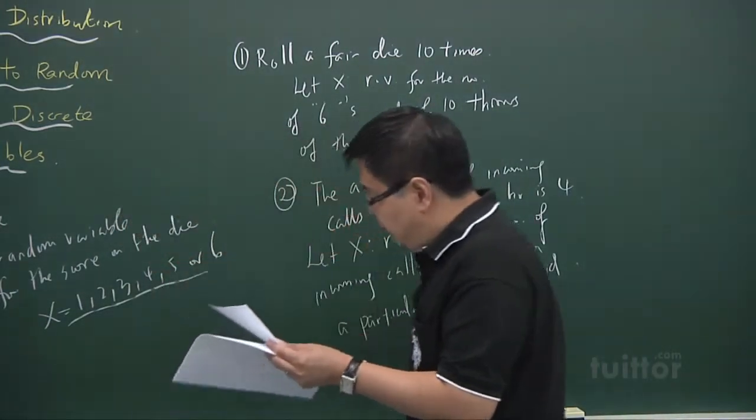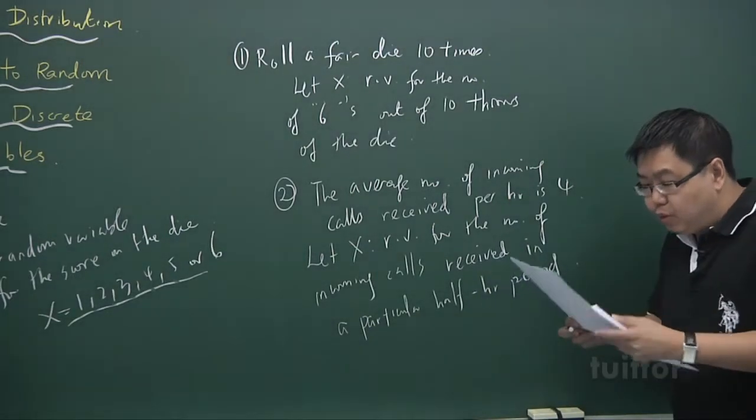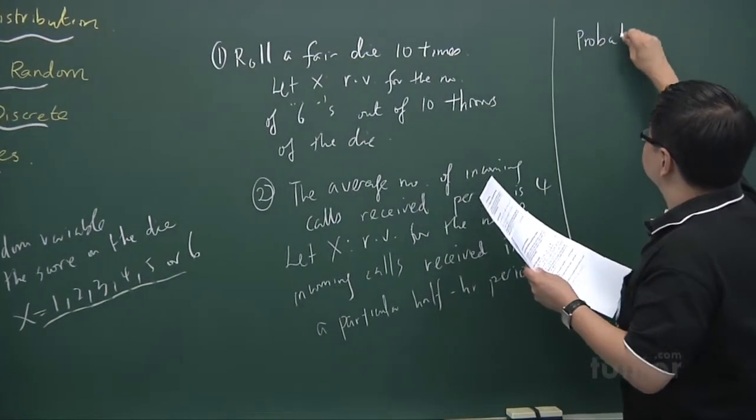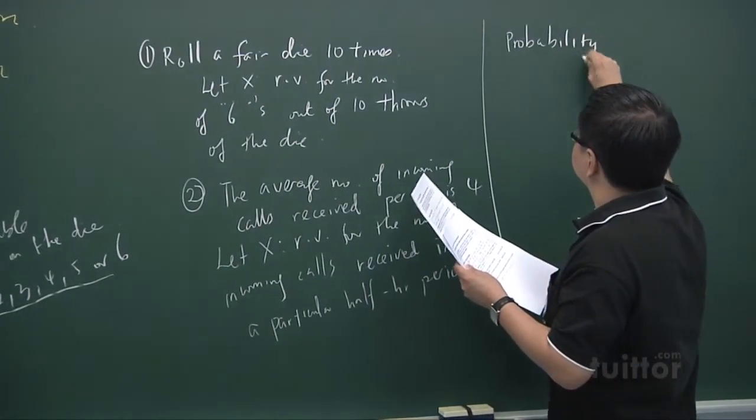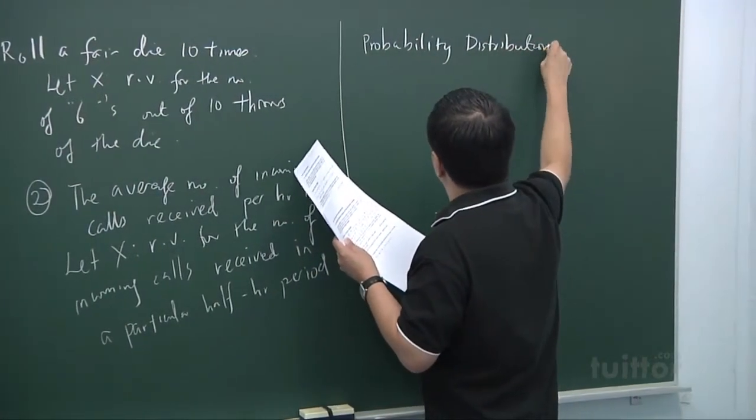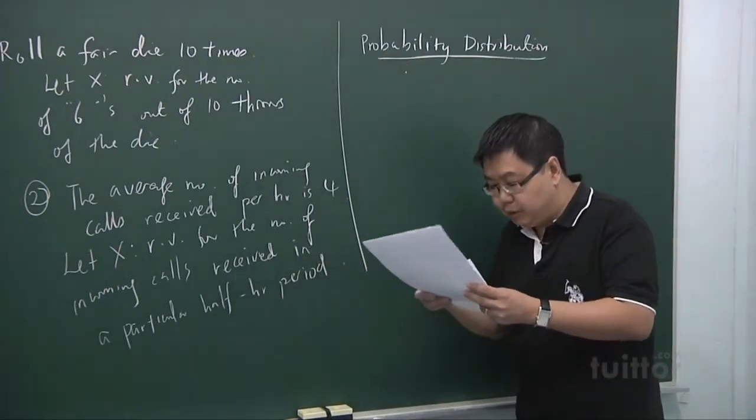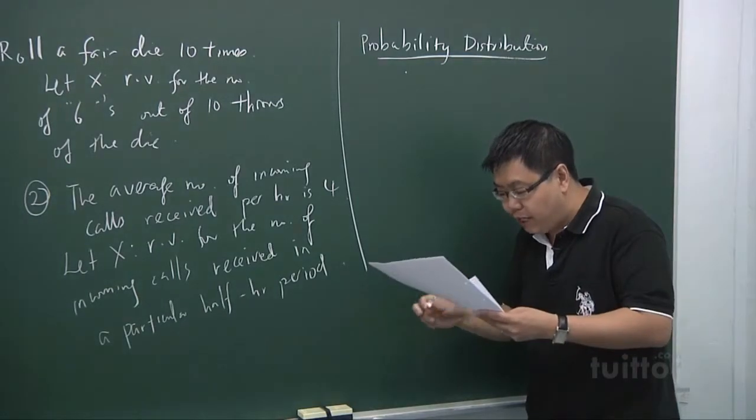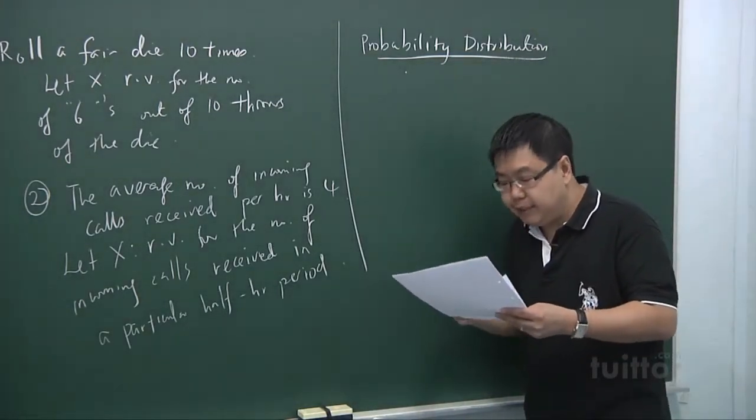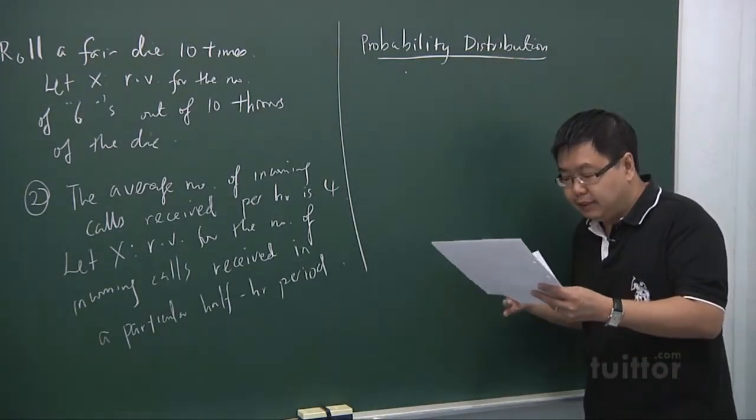Now, another term that you need to know is this thing called probability distribution. And probability distribution basically describes all the possible outcomes together with the probability of each happening. So that means it's basically a listing down of all probabilities.